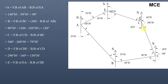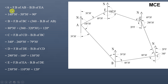Angle E equals the fore bearing of line EA minus the back bearing of line DE, which equals 230°30' − 110°30' = 120°. So the included angles for this closed traverse are: Angle A = 90°, Angle B = 120°, Angle C = 79°30', Angle D = 130°30', and Angle E = 120°.